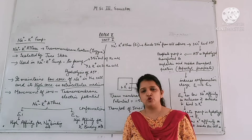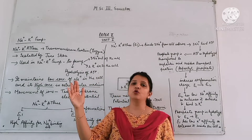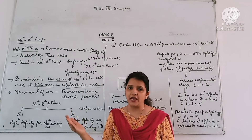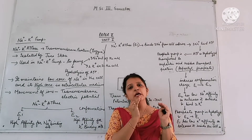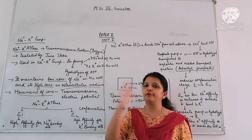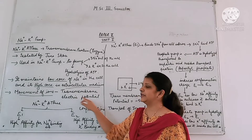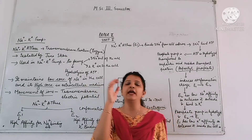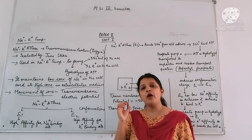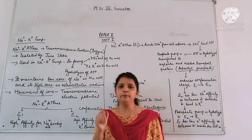The Na+ K+ ATPase enzyme pumps 3 Na+ to the extracellular space, meaning outside the cell, so Na+ concentration is high outside and reduced inside. This movement of ions generates a transmembrane electric potential. When ions move into and out of the cell, as a result, a transmembrane electric potential is generated.